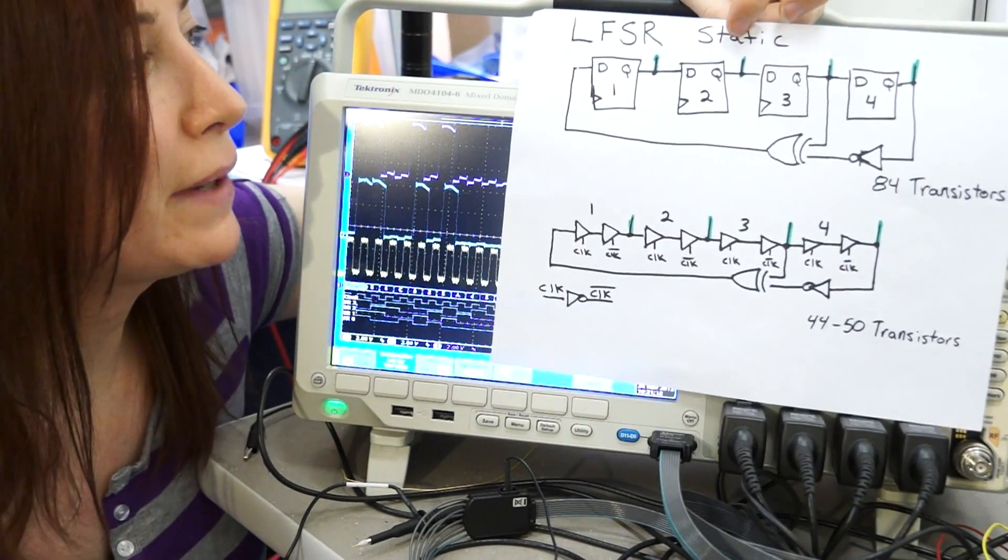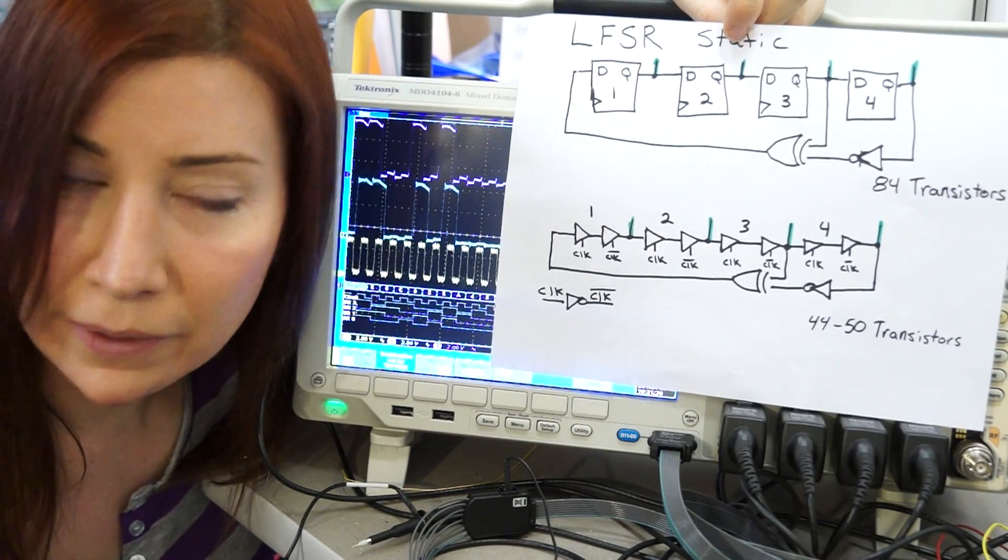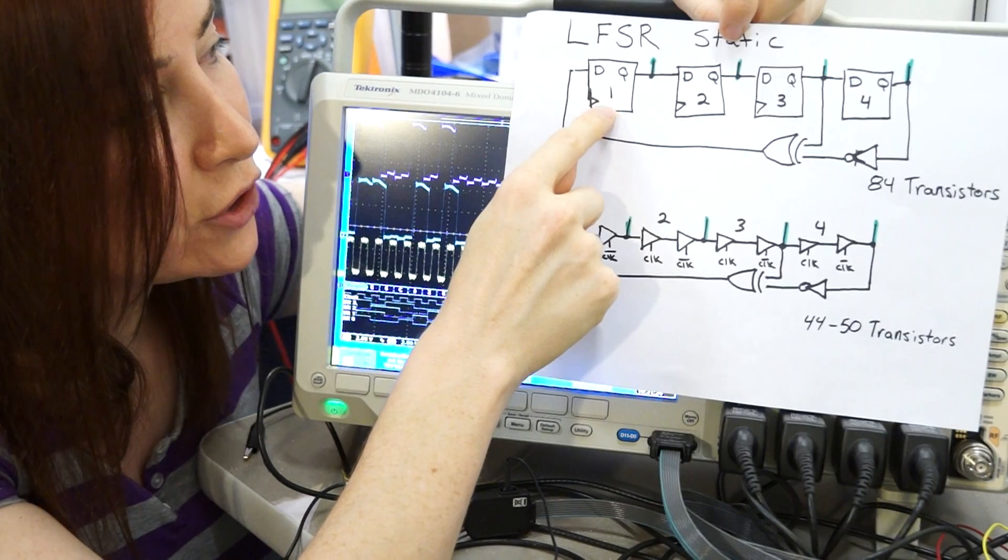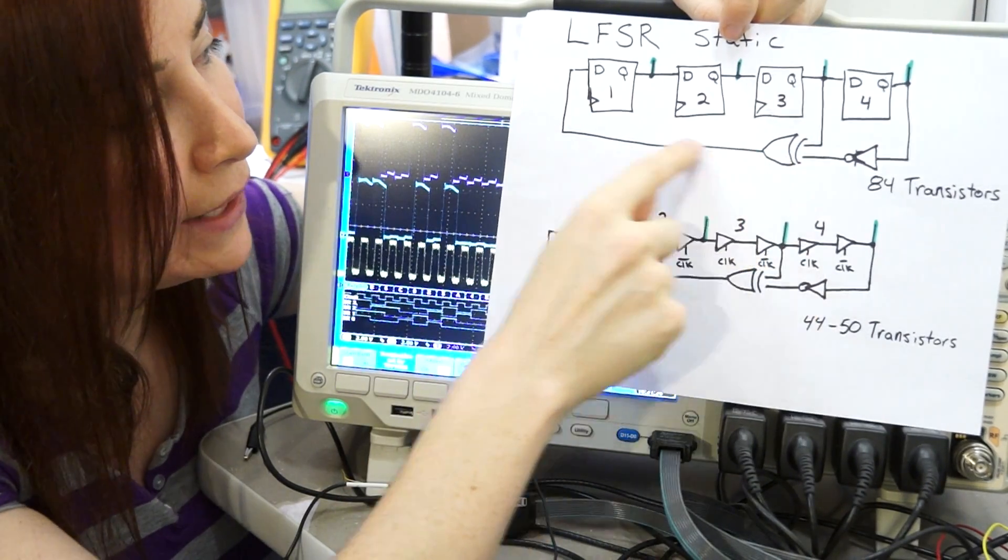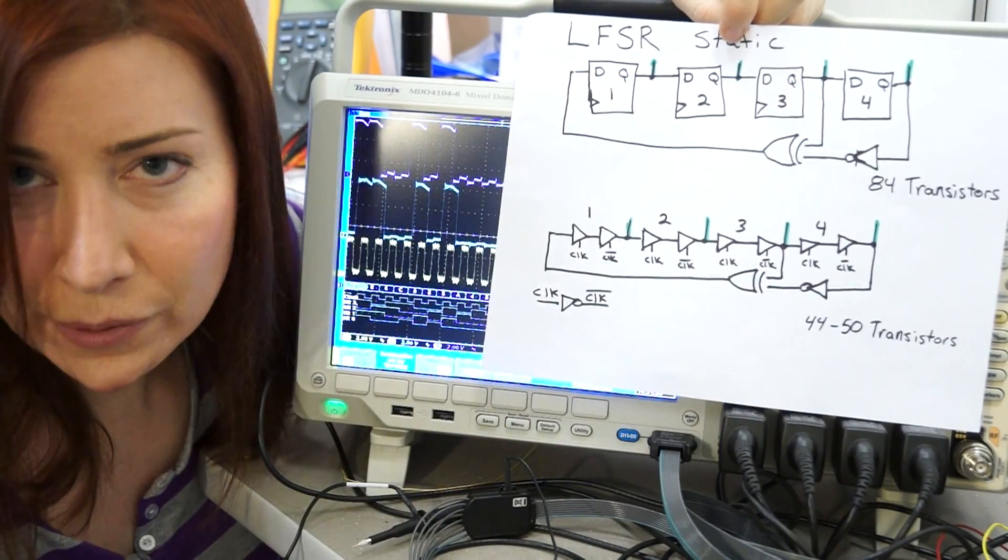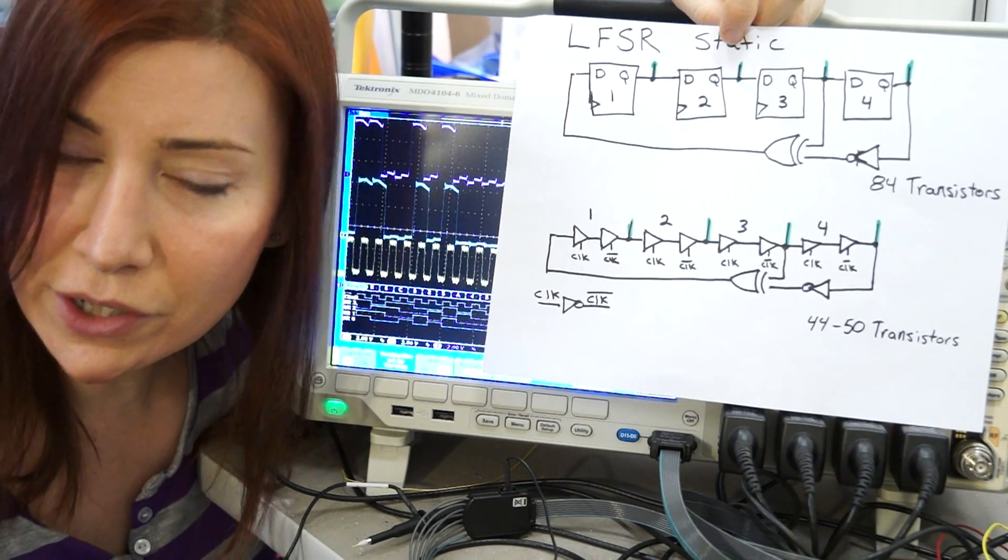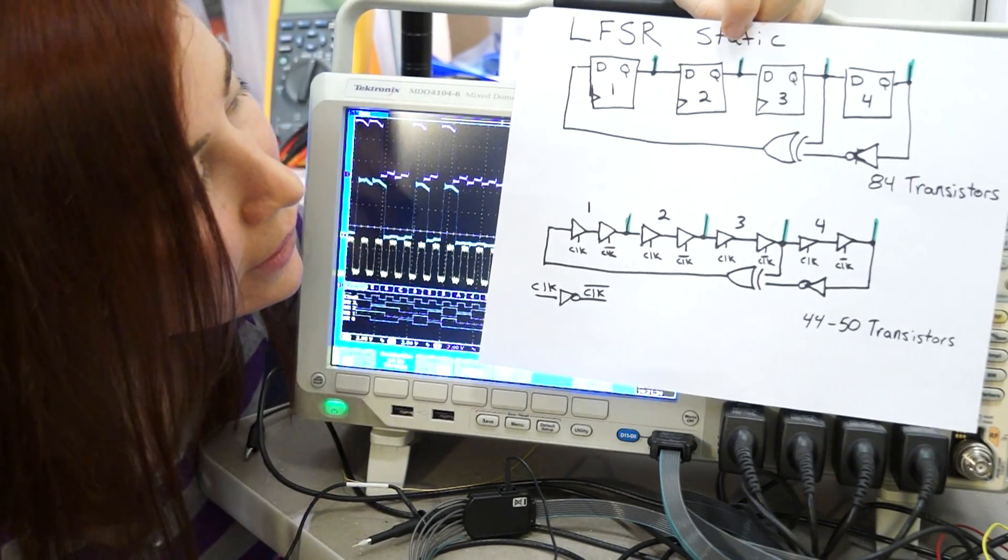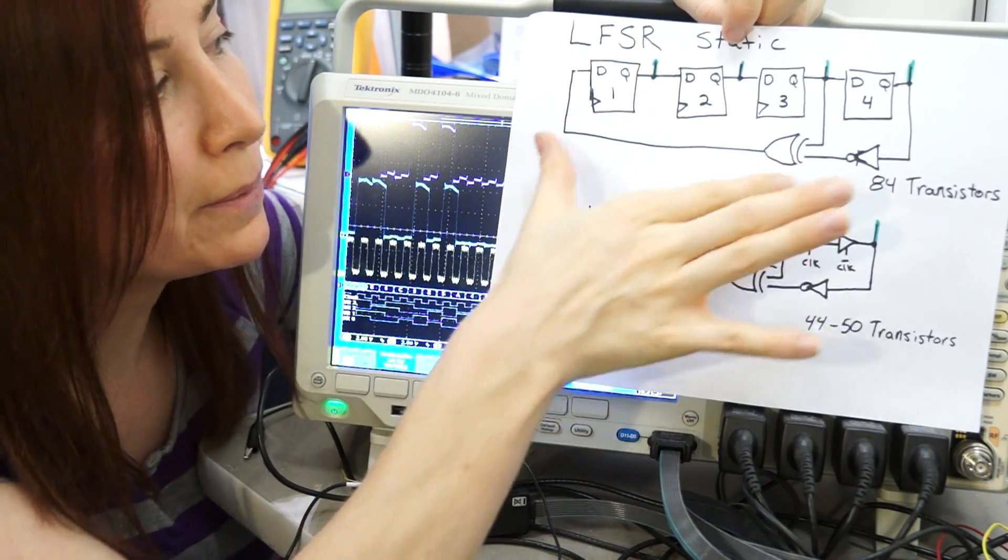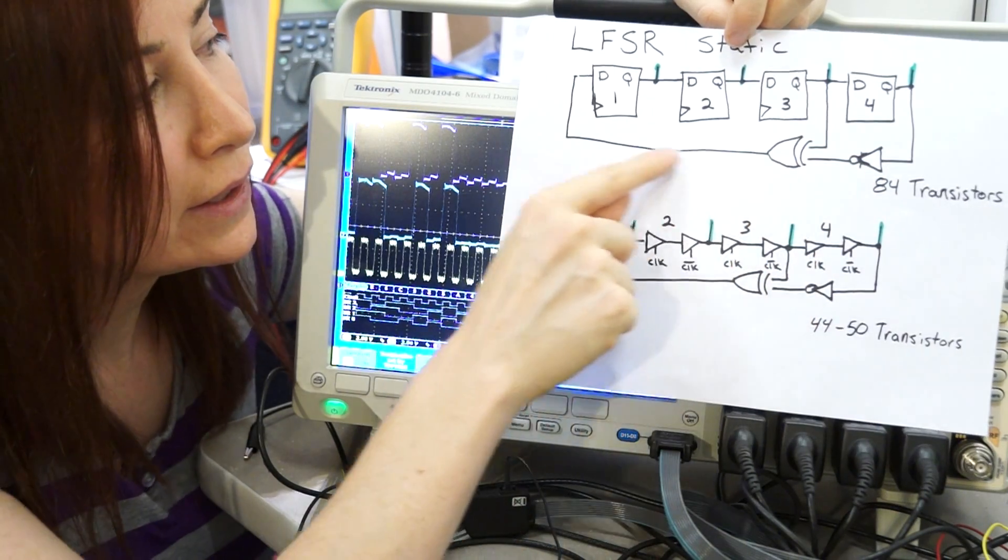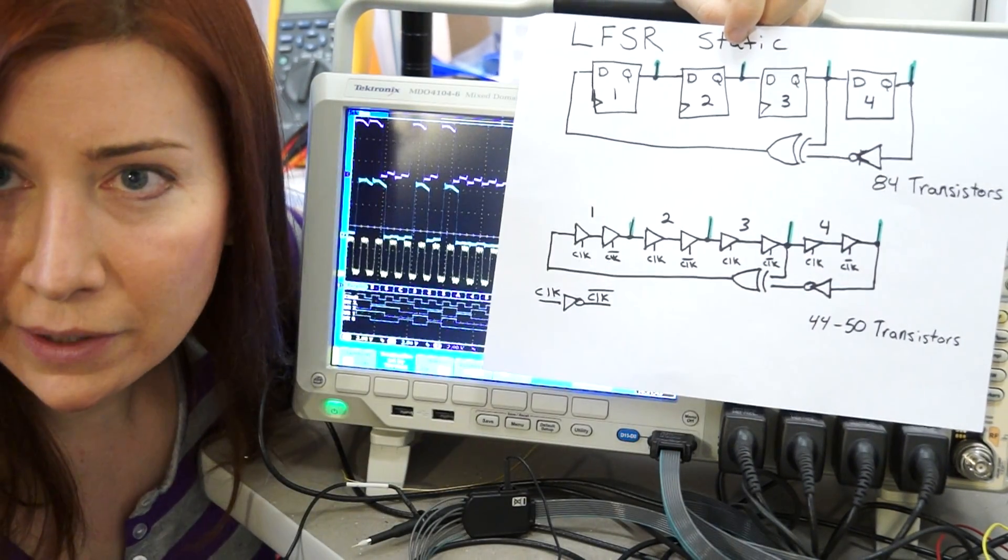For the test rig, I put together a linear feedback shift register. This is a sequence generator. This is what a static version would look like. It's a shift register with an XOR gate that feeds back. So this goes through 15 unique patterns. It only has one illegal state, which is all zeros. So that's why I have an inverter here, so that at power up these registers would be zero, but one gets inverted, which causes it to always start up.